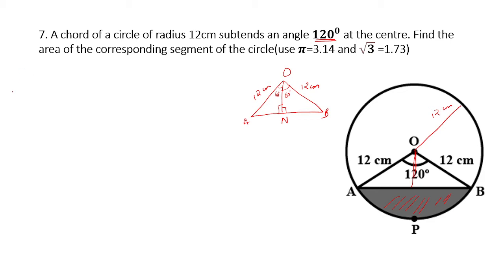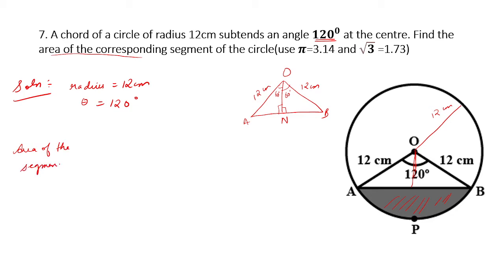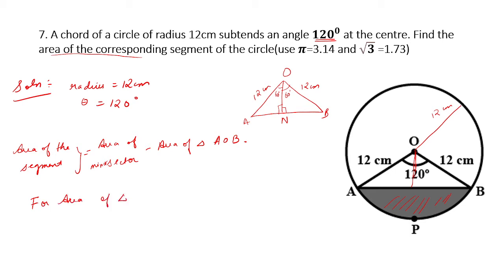For the solution: radius = 12 cm, theta = 120 degrees. To find the area of the corresponding segment, we use: area of segment = area of minor sector minus area of triangle AOB. We can easily find the area of the minor sector. For the area of triangle AOB, we first consider triangle AON.